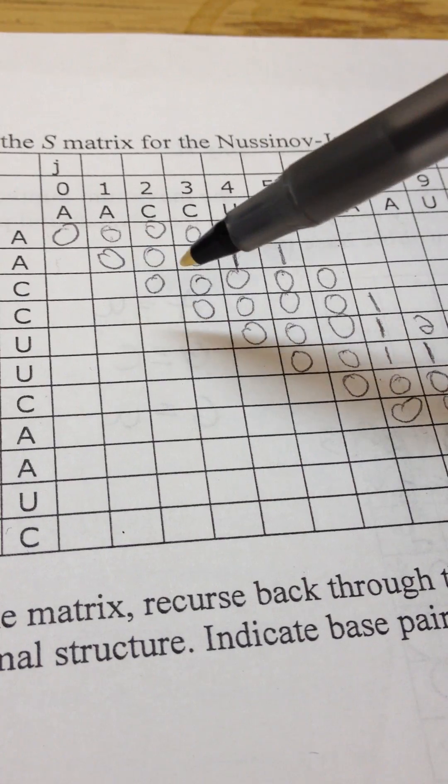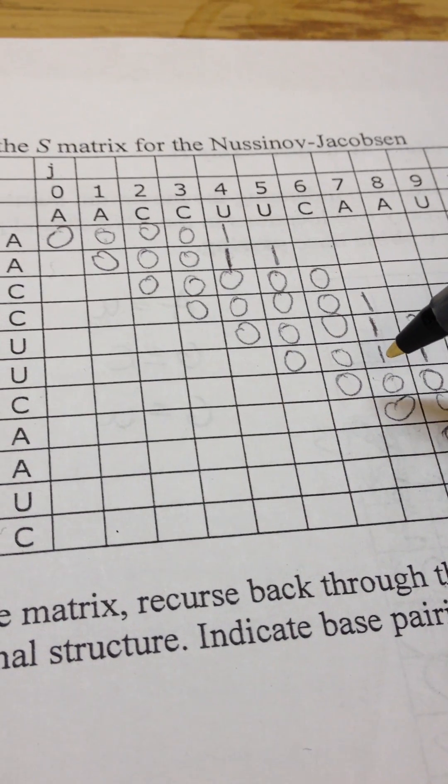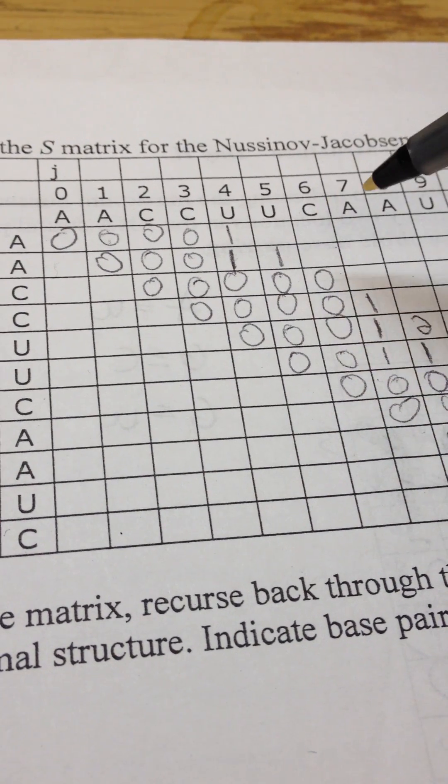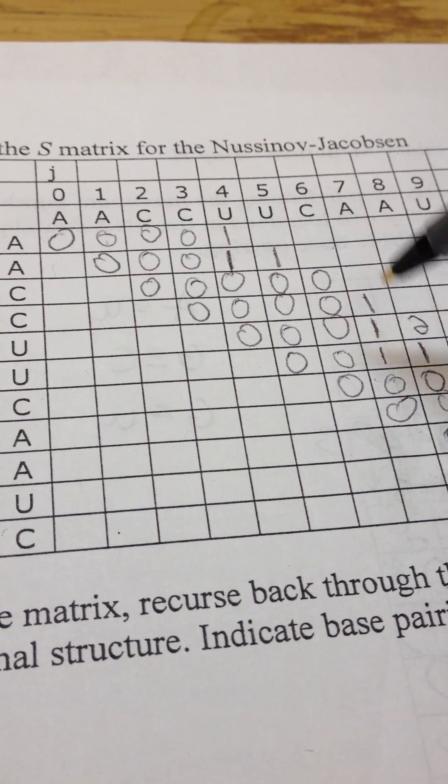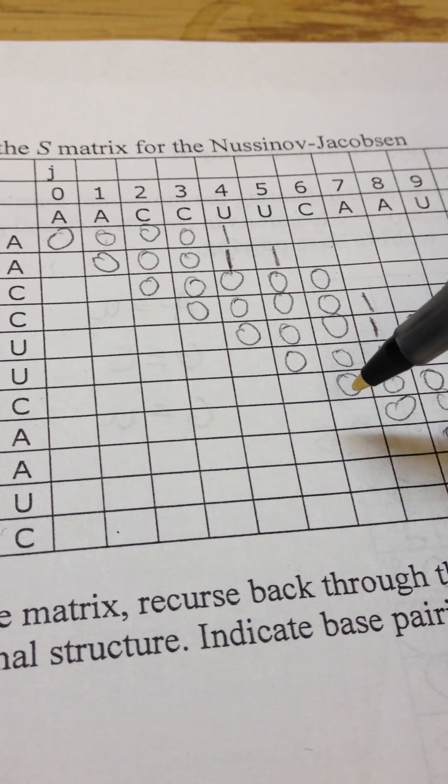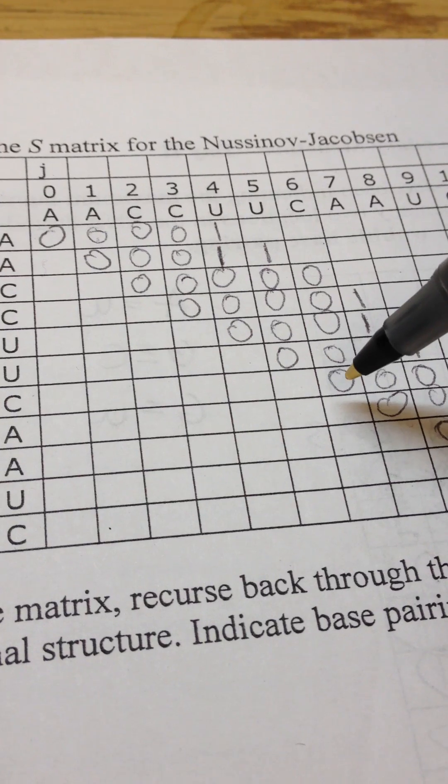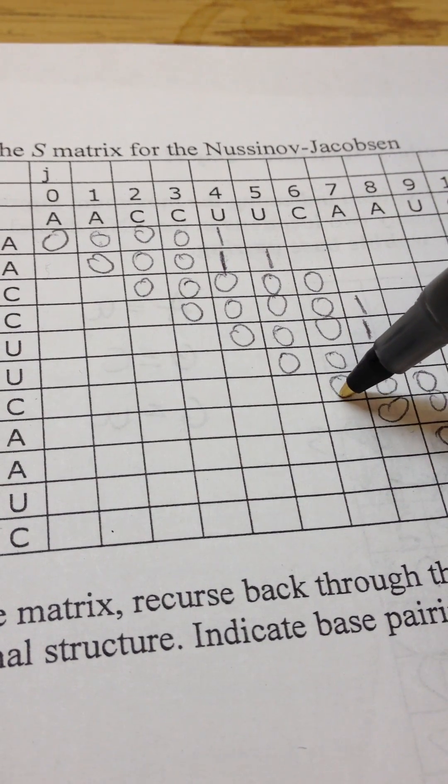As you can see, we follow the same trend in this diagonal. However, when we reach U and A, we notice those two can be aligned. So that's why we look to the left, or down to the left, and since it does match, we add one to this number.